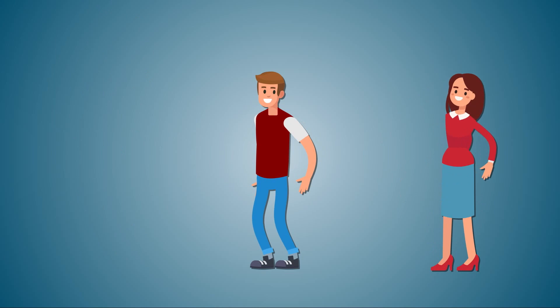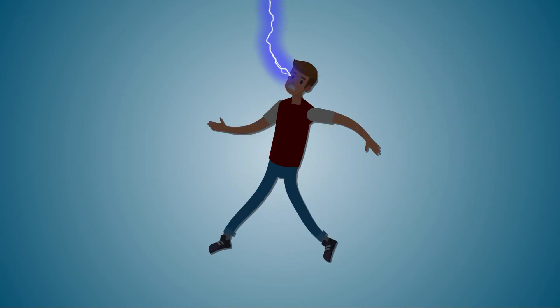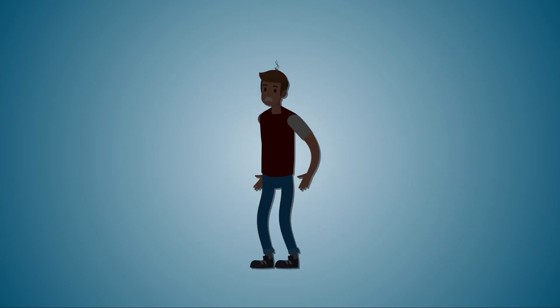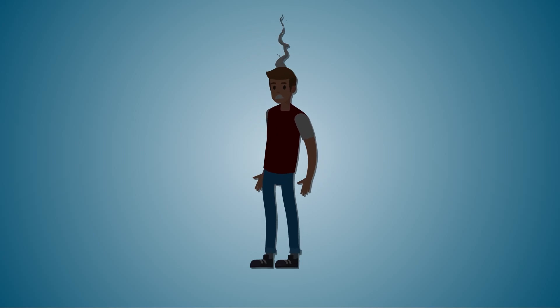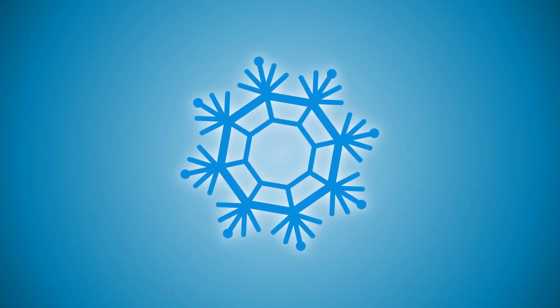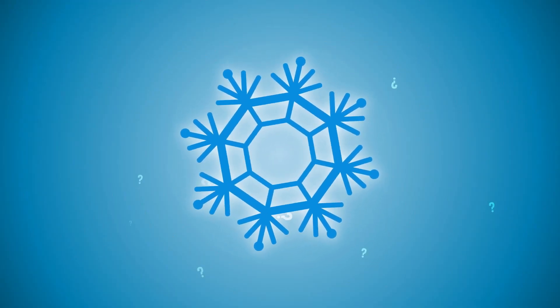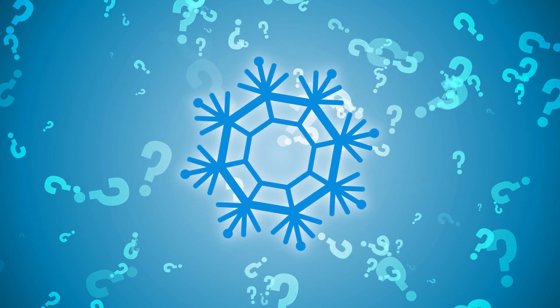Just how probable is that? Well, you have a better chance of winning the lottery twice or getting struck by lightning three times than you do of finding two identical snowflakes. So now we know that two snowflakes can be the same, it's just really unlikely.